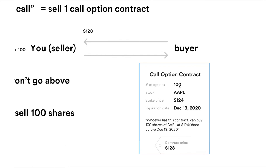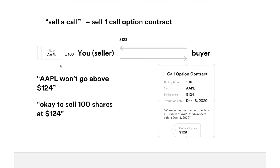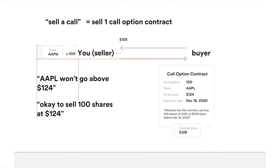The number of options is 100 — in option trading it always trades in blocks of 100. It defines the stock: Apple, strike price 124, expiration date on this date. Whoever has this contract can buy 100 shares of Apple at that price before that date. As the seller, in order to write or sell somebody this call option contract, you need to have 100 shares of Apple in your brokerage account as collateral — because in case the buyer decides to exercise the contract and buy 100 shares of Apple at 124, those shares come from you.